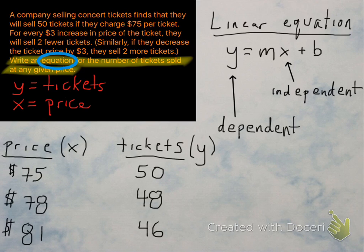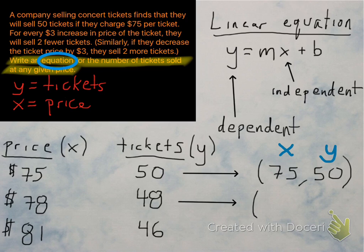So if you remember from the first slide, we wrote out these numbers. Now we're going to try to write a linear equation. The best way to do this is to put these into points. So price is X and tickets Y. So we have a point (75, 50) and we have another point, (78, 48).